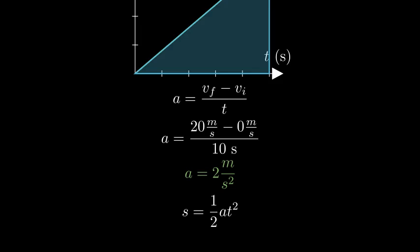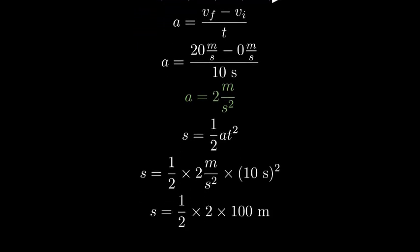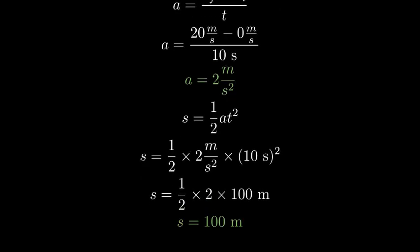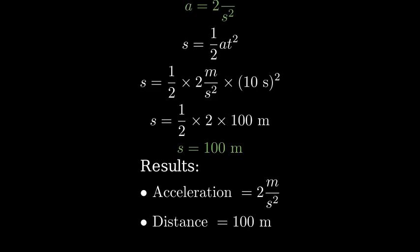Let's plug in our values. We have one half times 2 meters per second squared times 10 seconds squared. This gives us one half times 2 times 100 meters, which equals 100 meters. So to summarize, the car accelerates at 2 meters per second squared and travels a total distance of 100 meters.